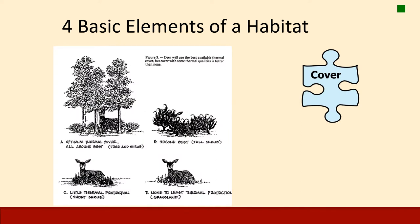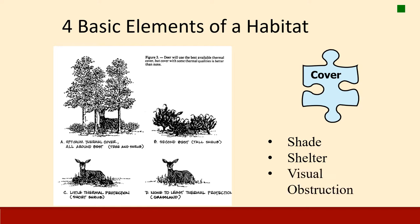The third basic element is cover. Cover is important for many different factors: it provides shade in summer when temperatures rise, and shelter from cold and wind in winter. We want to make sure we leave some kind of shelter when doing any restoration activity. Cover also offers visual obstruction, which is important for many species because it helps protect their young and helps them hide from predators.